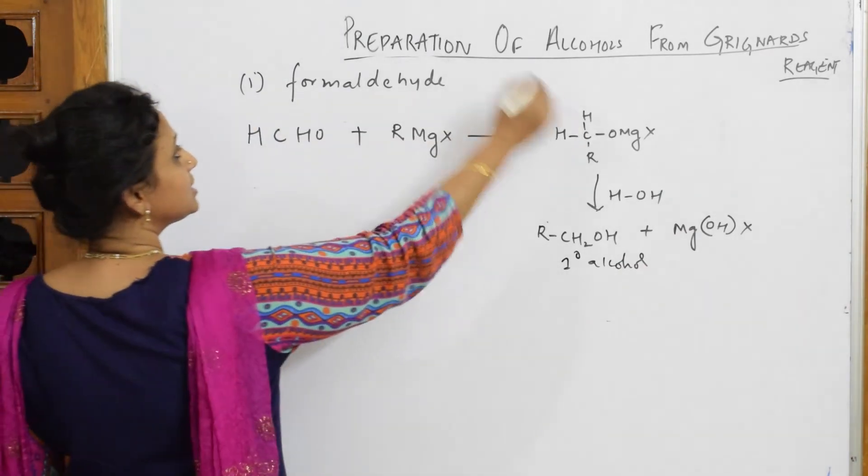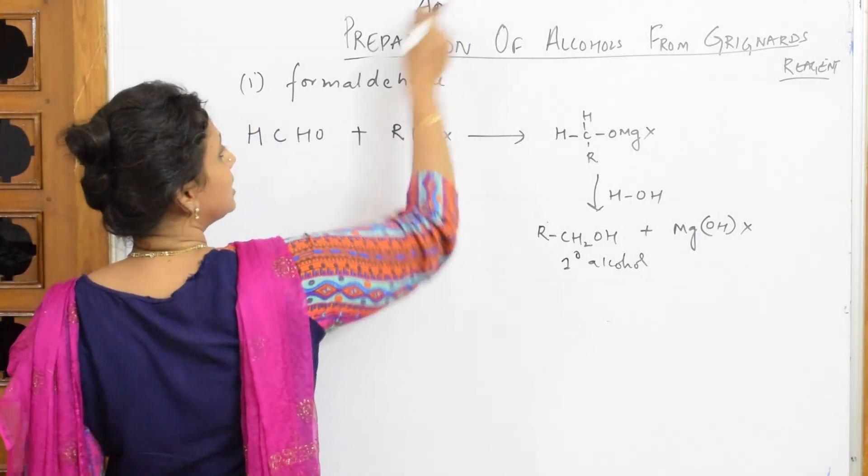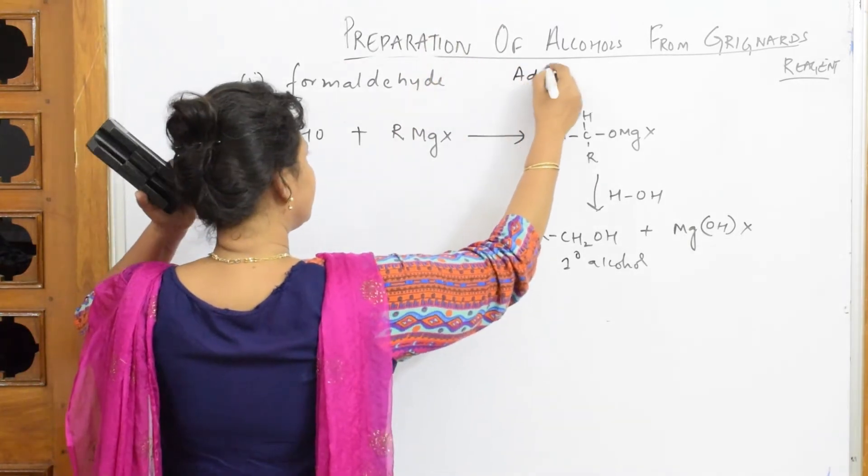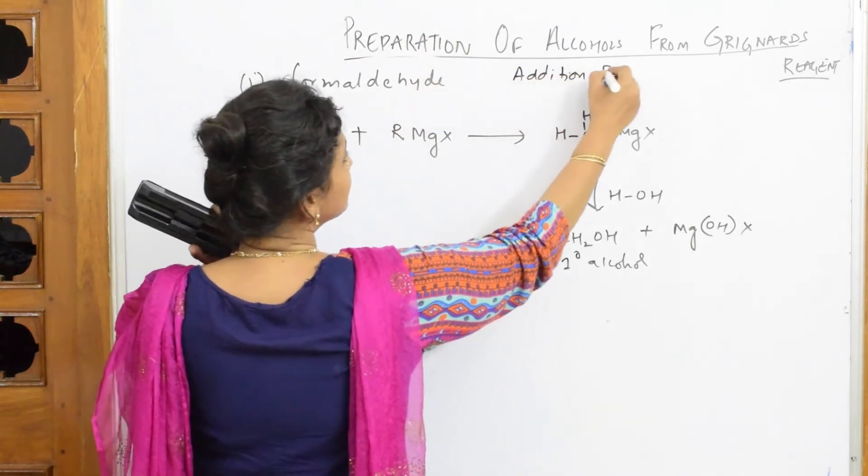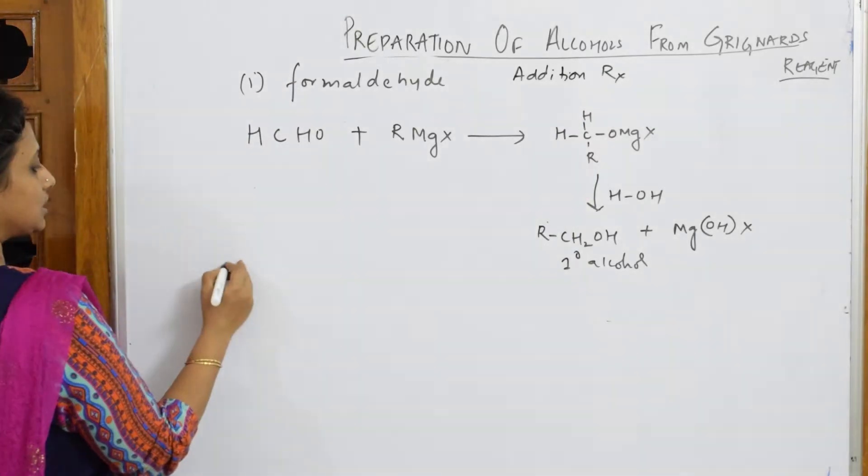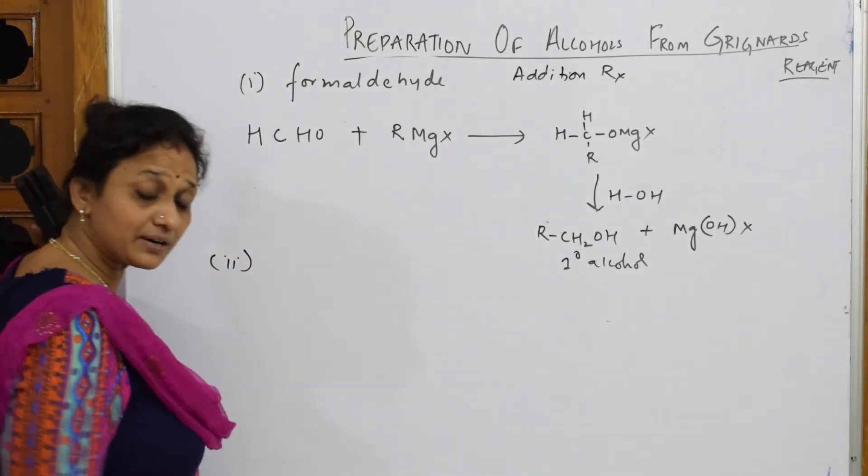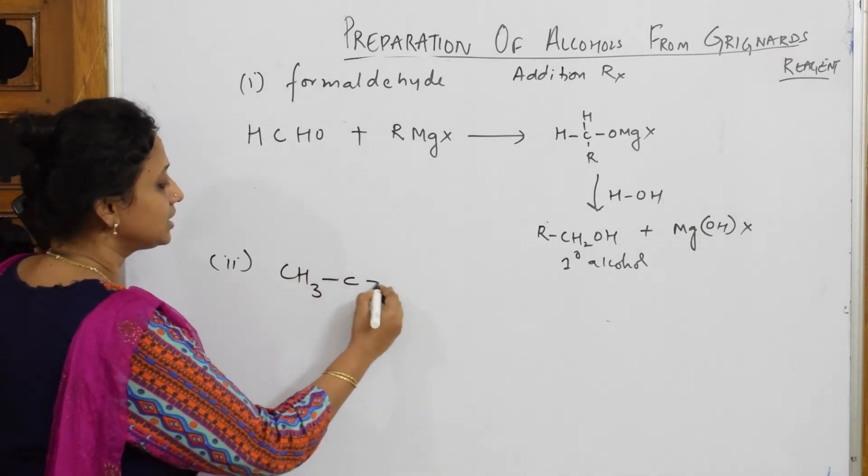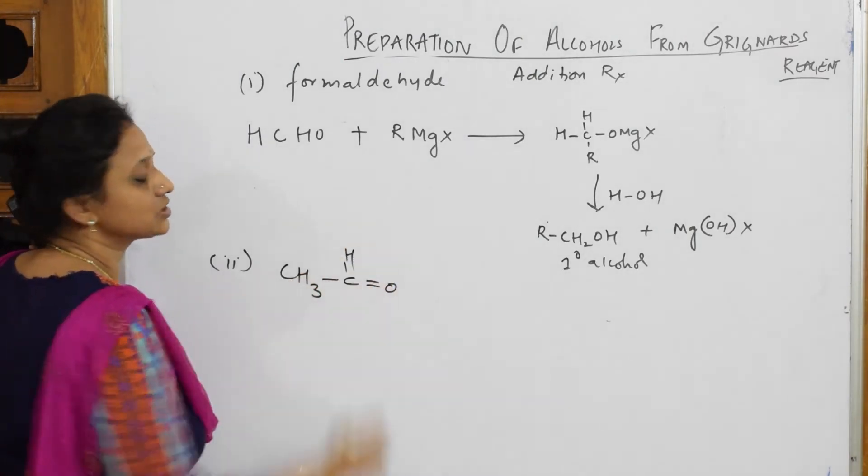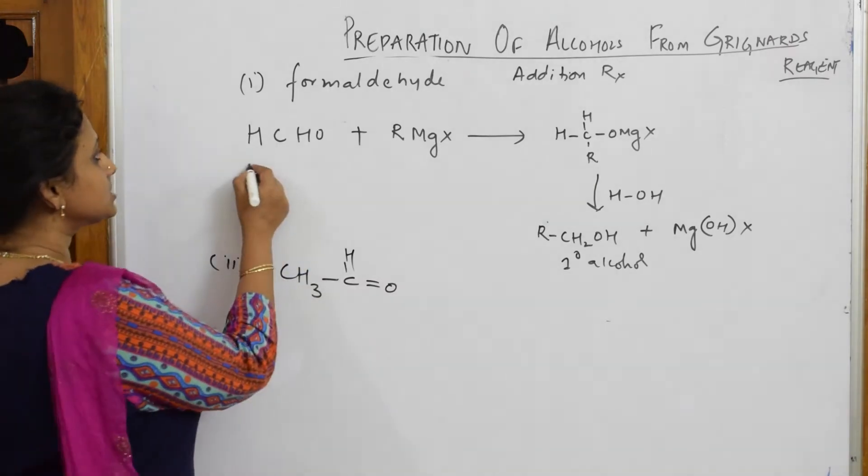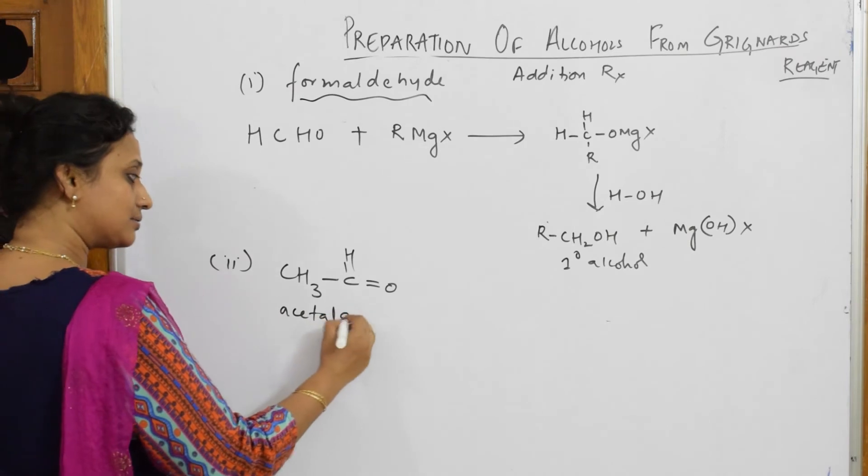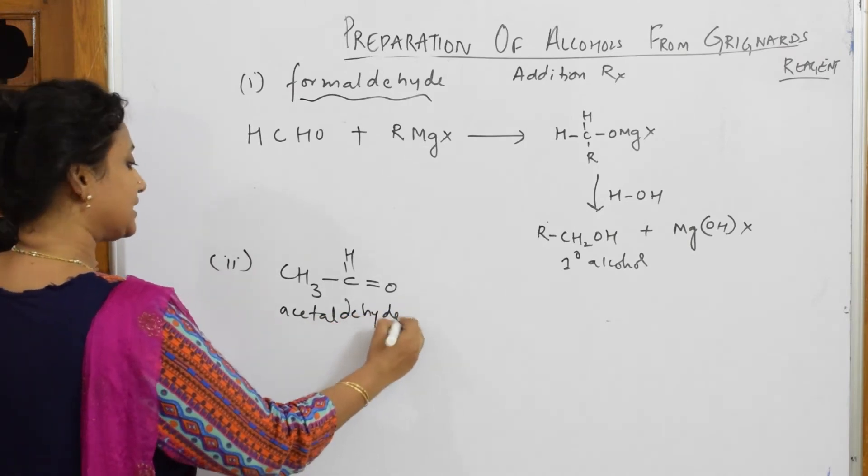Addition reactions. So with Grignard's reagent, whatever you see, all are addition reactions. Now I took, now let me take one more example apart from formaldehyde. Now I am going to take acetaldehyde. Now CH3C double bond O and H. Now this is formaldehyde as I have written. Now this is your acetaldehyde.